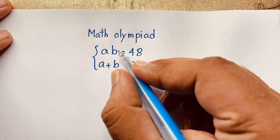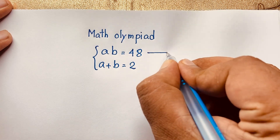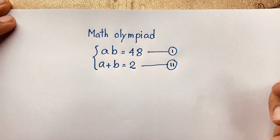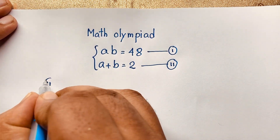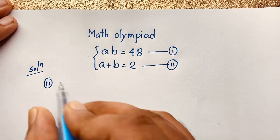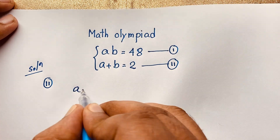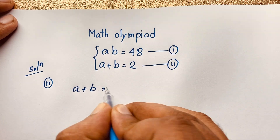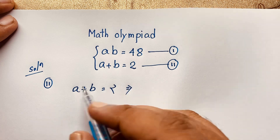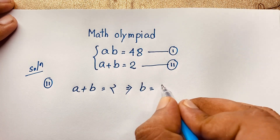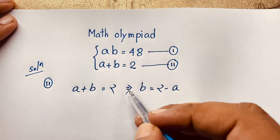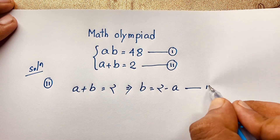We have two equations here. This is our first equation and this is our second equation. If I take our second equation, a plus v is equal to 2, we can say easily that v is equal to 2 minus a. I move the positive a to the other side, making it negative a. This is our third equation.